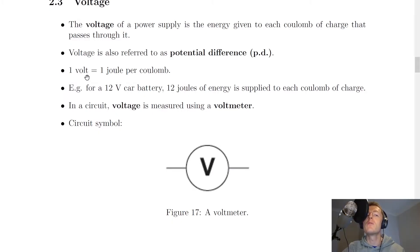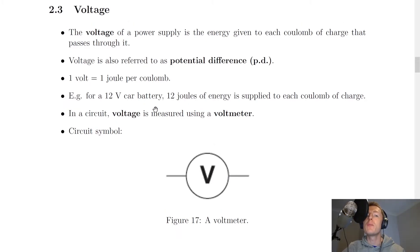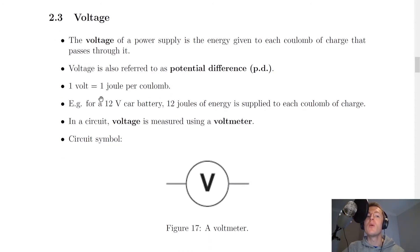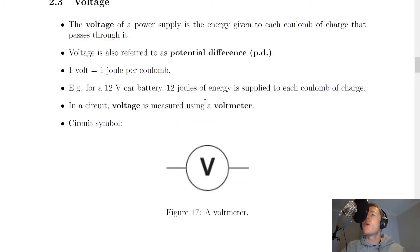Now a common multiple choice question asks what is one volt equivalent to. Well, from the definition we can see what one volt is equivalent to, because it tells us that voltage is the energy given to each coulomb of charge. That means because energy is measured in joules and charge is measured in coulombs, and voltage is essentially the energy divided by charge, then it's going to be one joule per coulomb.